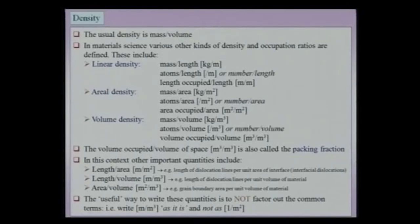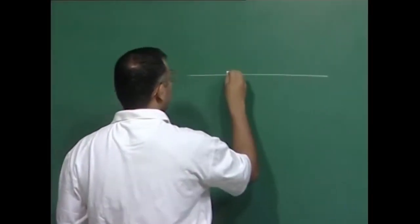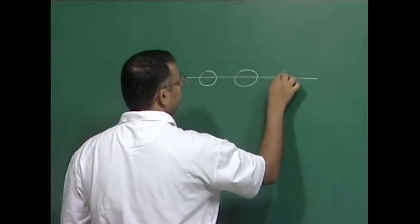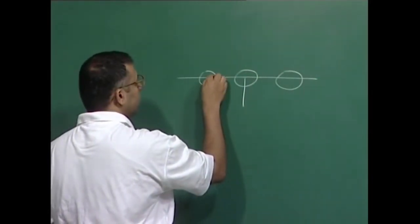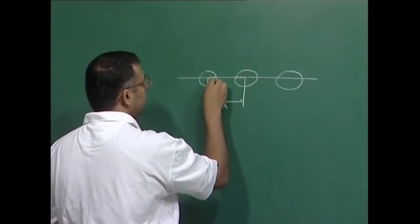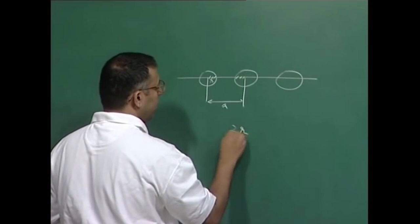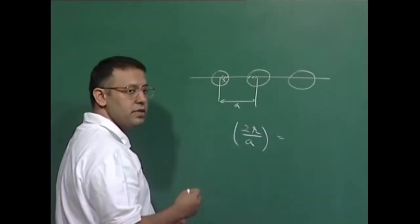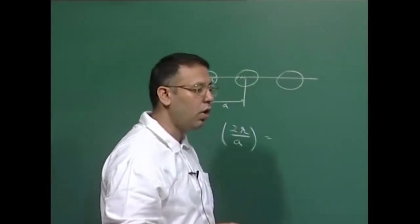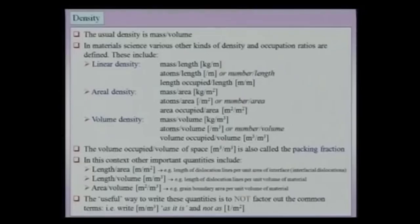Suppose you talk about a one-dimensional line through a crystal with an array of atoms. Certain parts of the line will be occupied by atoms and you count that fraction. If the unit cell length is 'a' and atom radius is 'r', then the linear density is 2r/a — a dimensionless length fraction. This is a kind of density: it is the length fraction occupied by atoms along the line.